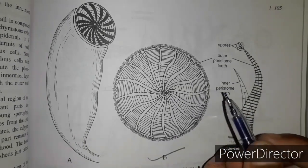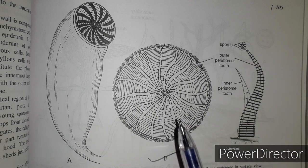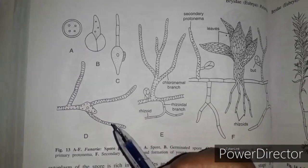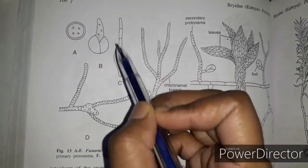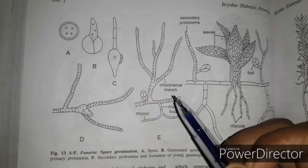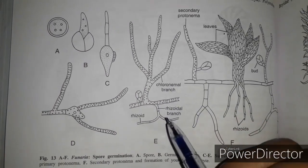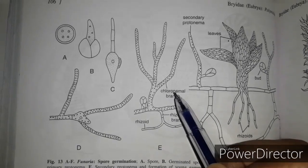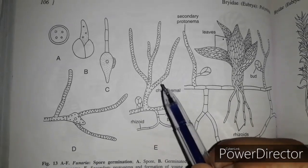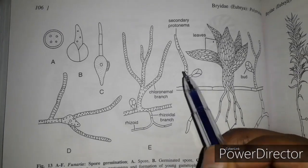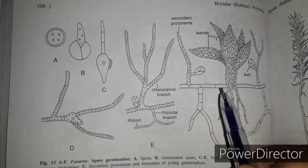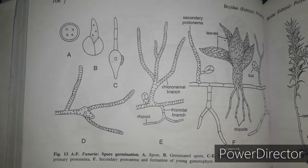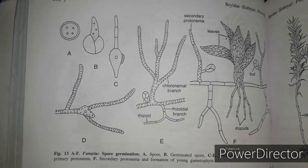The spores germinate to give rise to a new gametophytic plant. The spores give rise to two different types of branches: chloronemal branches and rhizoidal branches. The rhizoidal branches give rise to rhizoids, and the chloronemal branches divide to give rise to primary and secondary protonema containing buds. These buds develop into a new gametophytic plant, completing the life cycle of Funeria. Thank you so much — if you like this video, please subscribe, like, and share.